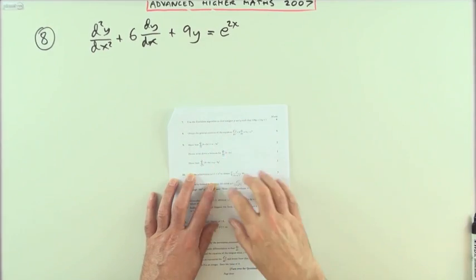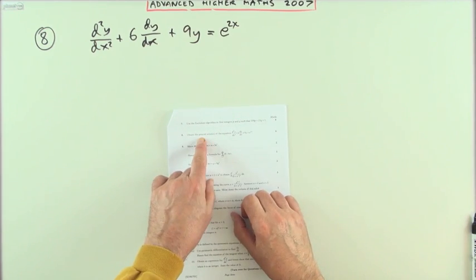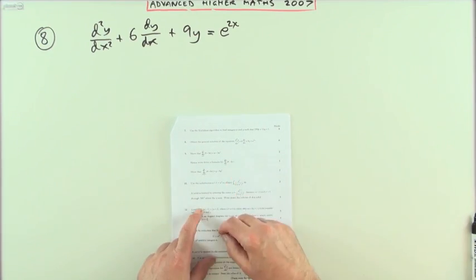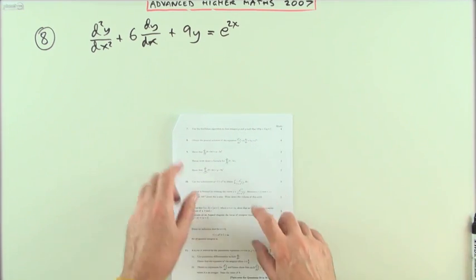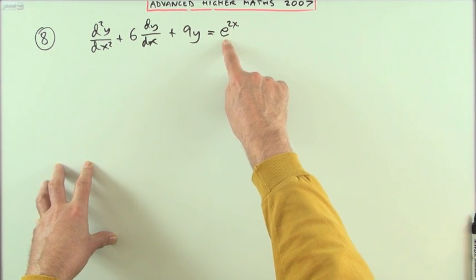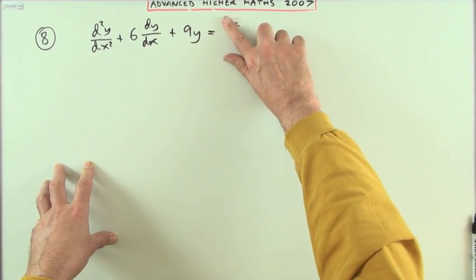Number eight from the 2007 Advanced Higher Maths: a second-order differential equation, just the general solution. So there's none of that arithmetic at the end to find a particular solution, but that's why it's six marks, not ten. First step: rather than solving for this function straight away, find the function that lurks within it.